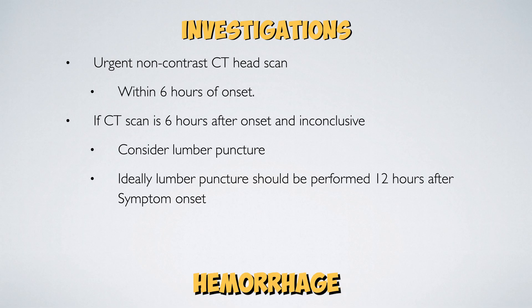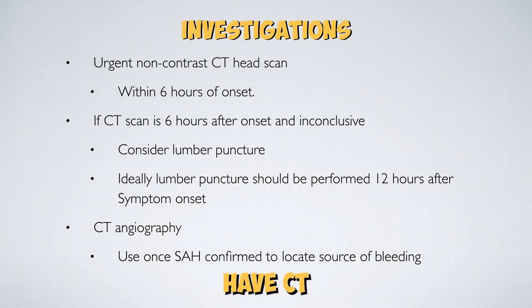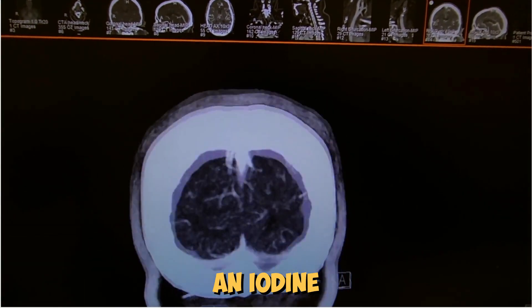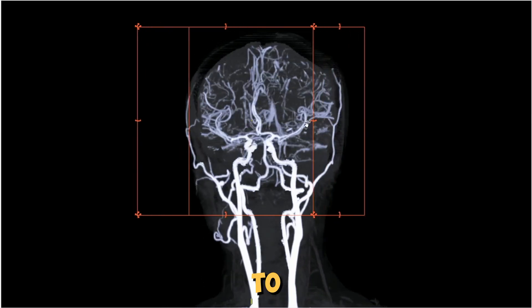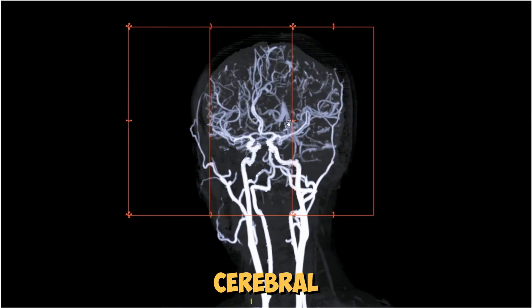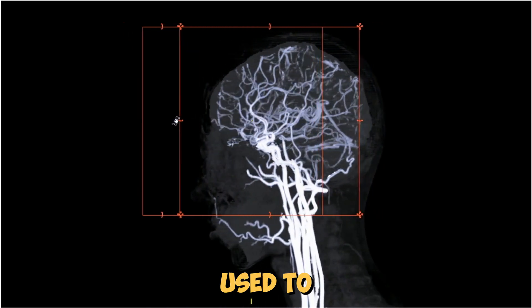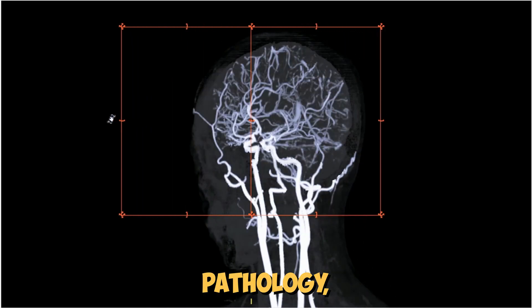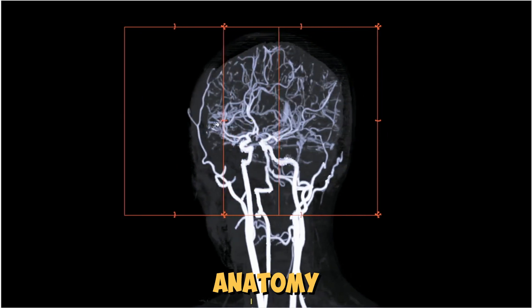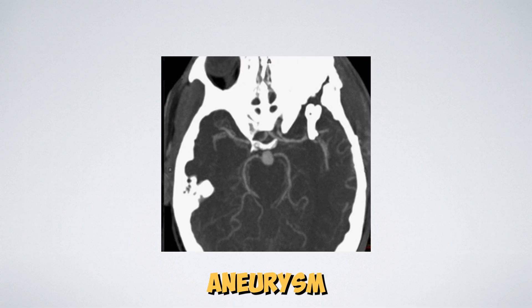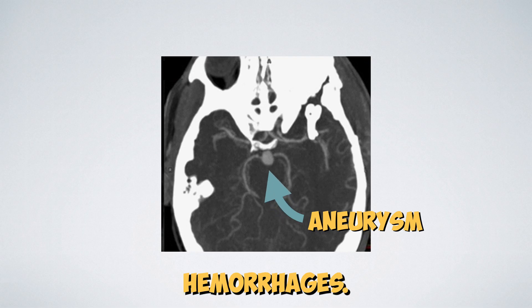Once subarachnoid haemorrhage is confirmed, patients should have CT angiography — a specialised CT scan where an iodine-based contrast is used to illuminate cerebral circulation. This is used to identify the causal pathology, define the anatomy, and plan the best option to secure aneurysm-related haemorrhages.